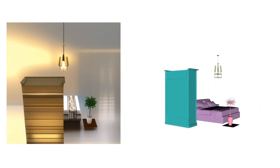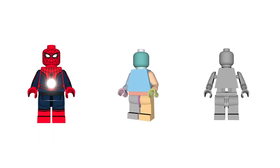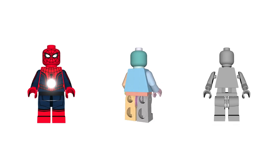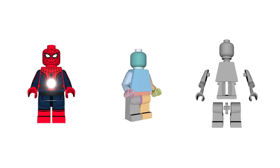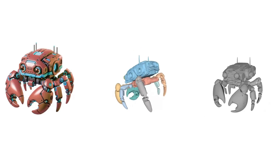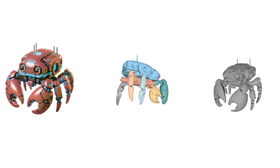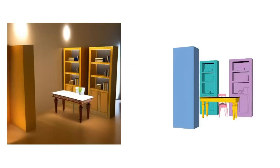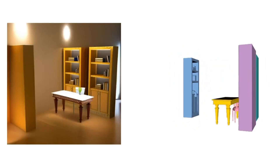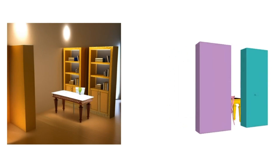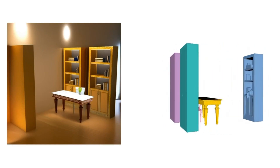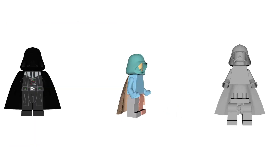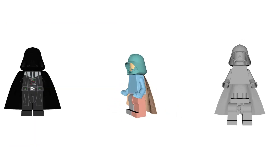PartCrafter uses a compositional generation model where each 3D part is represented by its own set of latent tokens. The model understands how parts should look on their own and how they should work together, combining local detail with global coherence thanks to a hierarchical attention mechanism. The result: 3D assets that are both detailed and structured.